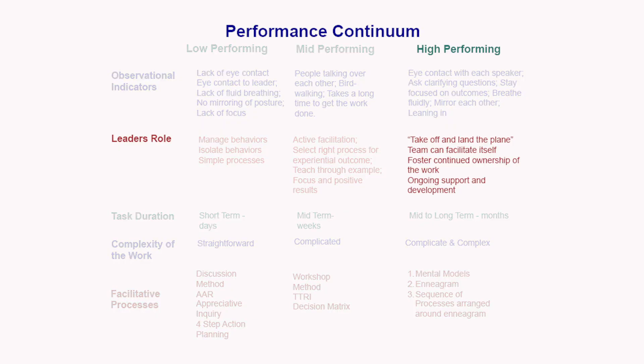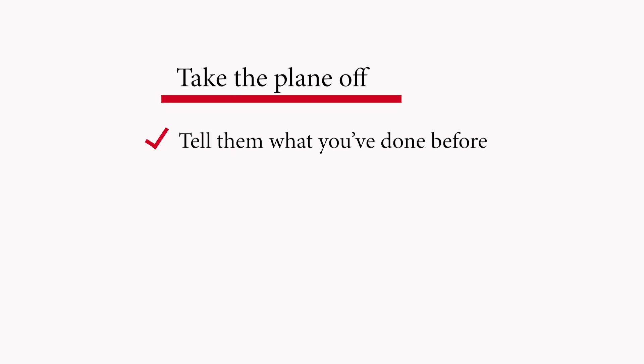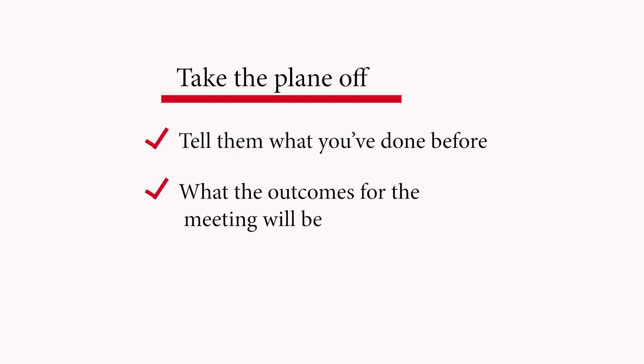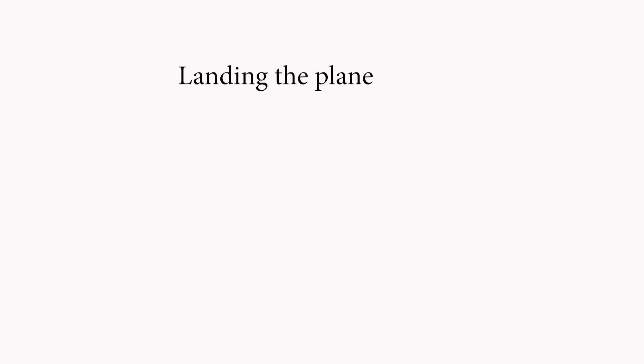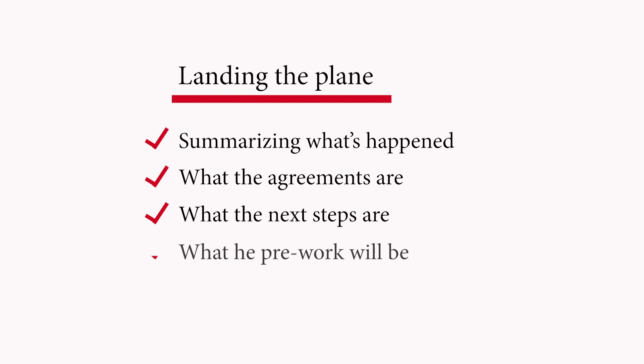In a high performing team, the role of the leader is largely to stay out of the way. It's like a pilot — you need to take the plane off safely, which means telling the group what's been done before the meeting, what the outcomes will be, and what process will be used. Then you get out of the way. At the end you land the plane: summarizing what's happened, the agreements, next steps, and pre-work for the next meeting. High performing teams are more productive and require less management and facilitation.